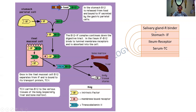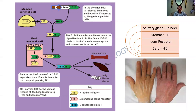As a summary, remember: the salivary gland produces R binder, the stomach produces the intrinsic factor, the ileum has a receptor, and the serum has transcobalamin. There are three types of transcobalamin — transcobalamin 1, 2, and 3. Who is supposed to be most active in carrying B12?